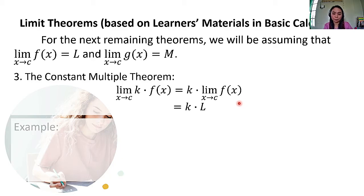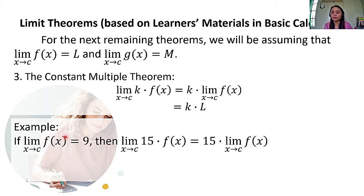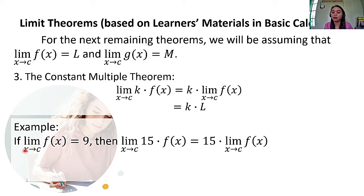For our example: if the limit of F of X as X approaches C is equal to 9, then the limit of 15 times F of X as X approaches C is equal to 15 times the limit of F of X as X approaches C. Since the limit of F of X as X approaches C equals 9, we get 15 times 9, which is equal to 135.